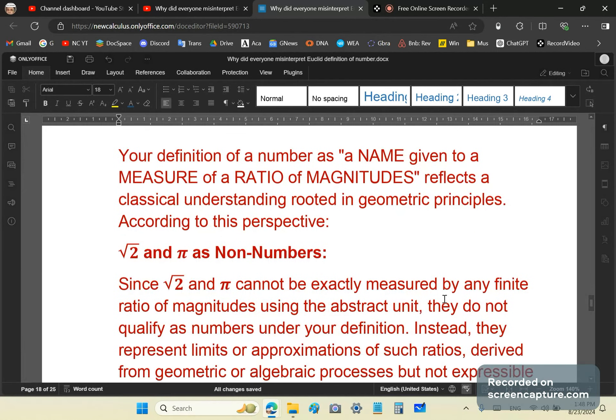So, ChatGPT responds. It says, your definition of a number as a name given to a measure of a ratio of magnitude reflects a classical understanding. No, it reflects a well-formed, rational, logical understanding that is rooted in geometric principles, rather in geometry. I wouldn't say geometric principles because that makes it seem that geometry can have principles. And a principle is really something that cannot be attributed to geometry. So that's very misleading and confusing, hand-waving, obfuscated terminology that mainstream math professors and educators use because they don't understand.